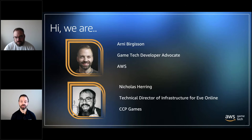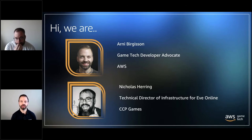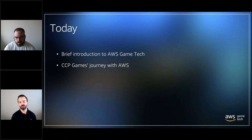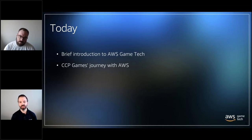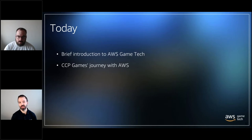I've been with AWS for four years, first as a solutions architect and then as a developer advocate. I've been working with games customers across the Nordics and EMEA. I'm joined today by Nick Herring, who's the technical director of infrastructure for EVE Online at CCP Games. I'll start with a brief introduction to AWS and game tech, then hand it over to Nick for a compressed recap of CCP Games' journey adopting AWS — including why they chose the route they did and some of the spike pits they encountered.